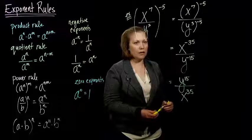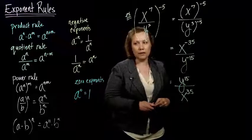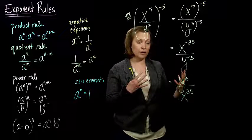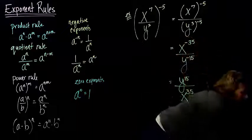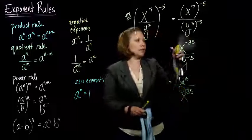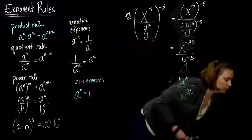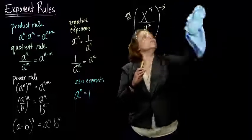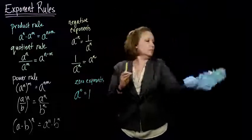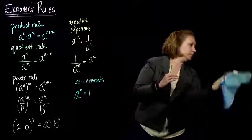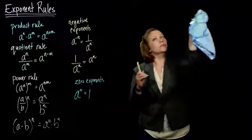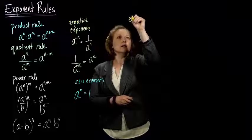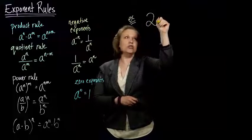But remember, what negative exponents tell us to do. If it's negative in the bottom and we take it to the top, it becomes positive. So take the y's to the top, and that becomes to the positive 15 power. And then the x's we're going to take into the bottom, and it becomes the positive 35 power. That's another example of how you might use these exponent rules together to simplify an algebraic expression. I've got one more for you. It's a little tricky.